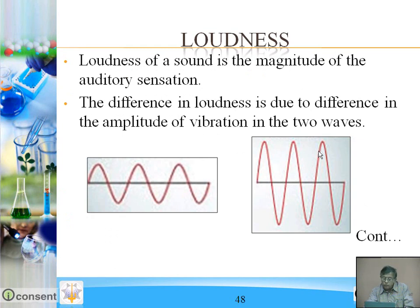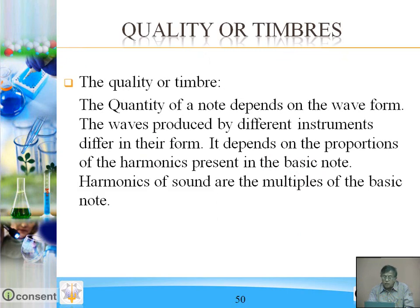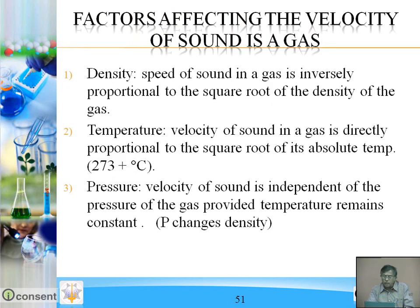Loudness of sound is the magnitude of the auditory sensation. The difference in loudness is due to the difference in the amplitude of vibration in the two waves. Intensity of sound is the time rate at which sound energy flows through a unit area; intensity is directly proportional to the square of the amplitude. Quality or timbre: the quality of a note depends on the waveform. The waves produced by different instruments differ in their form and depend on the proportions of harmonics present in the basic note. Harmonics of sound are the multiples of the basic notes.